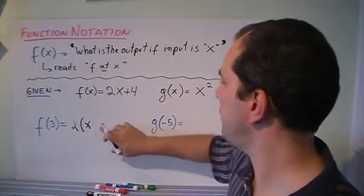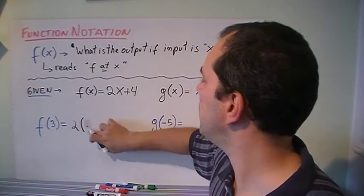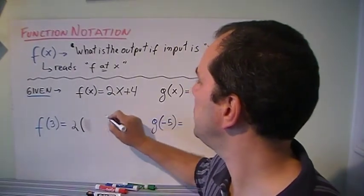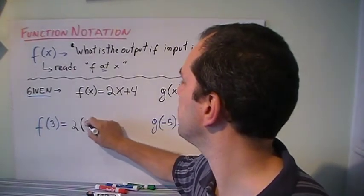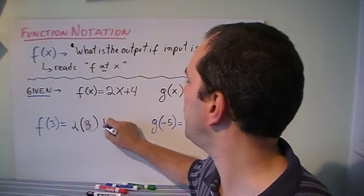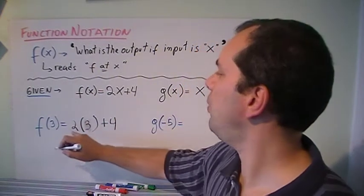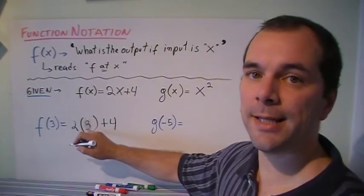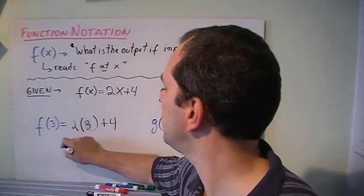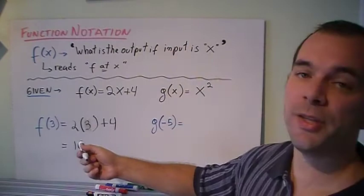Not x I'm sorry, that's not good. 2 times 3 which is my x plus 4. Well 2 times 3 is 6, 6 plus 4 is 10, so 10 is my answer.